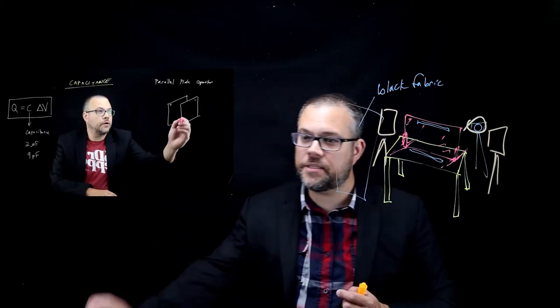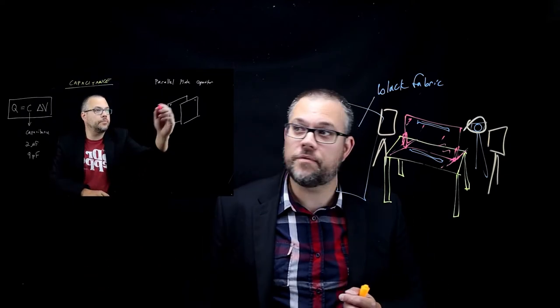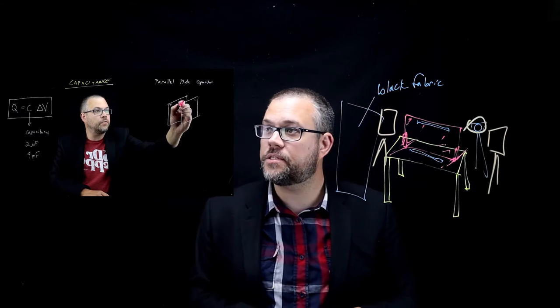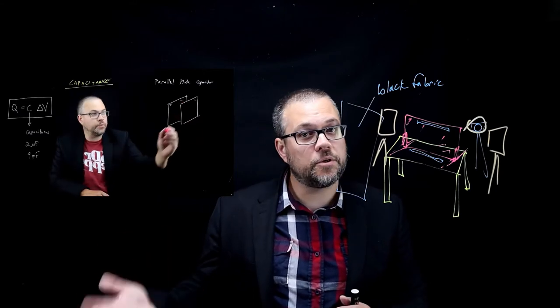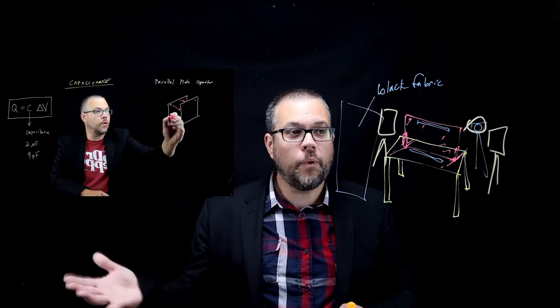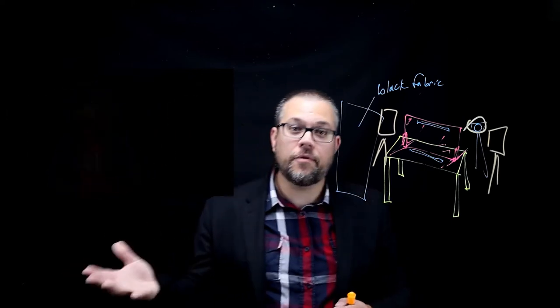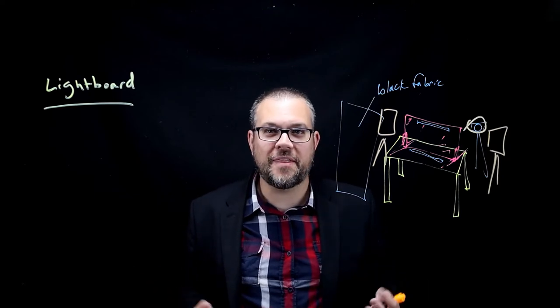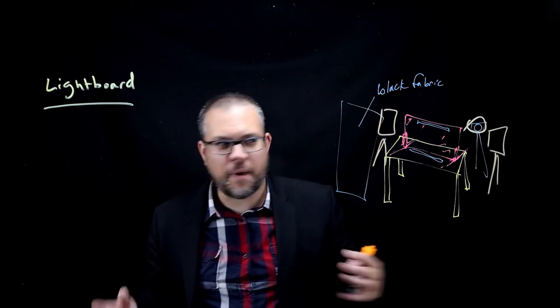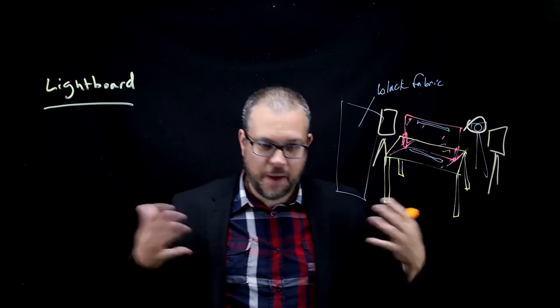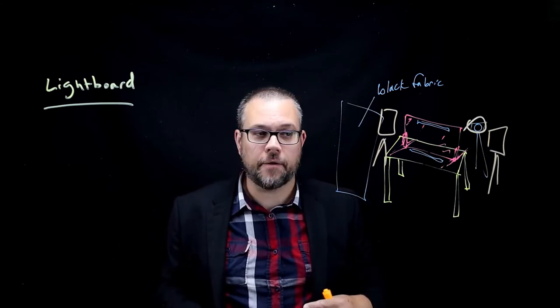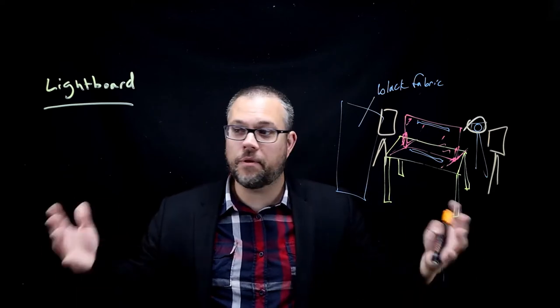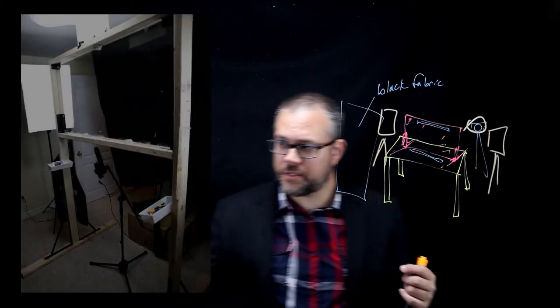Now this over here is an example of a video using my version two of the studio. This is how I made videos for our Physics 2 class happening right now in the summer, and you can see the quality is much better than version one. But one of the things I really didn't like about my second version was the fact that I had to sit down and lecture, and I'm very uncomfortable doing that. I really like to stand up, move around, wave my hands around, become animated, and I find that hard to do sitting down.